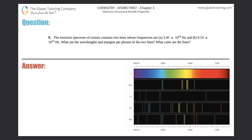Number nine: the emission spectrum of cesium contains two lines whose frequencies are a) 3.45 times 10 to the 14th hertz and b) 6.53 times 10 to the 14th hertz. What are the wavelengths and energies per photon of the two lines, and what color are the lines?